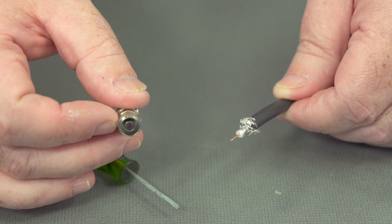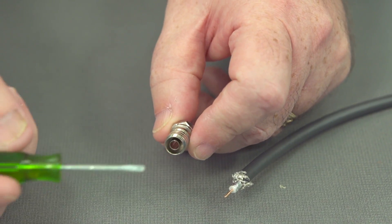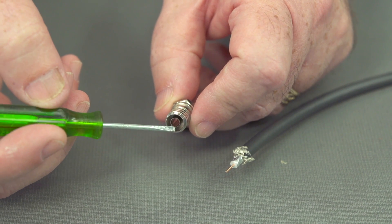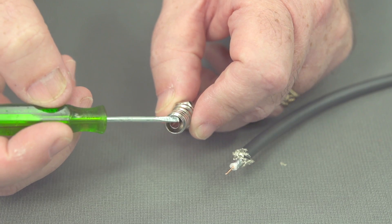You can see that there's a center hole in the middle, and this is where the center conductor and the dielectric will fit inside this middle hole. Then on the outside, this is where the braided shield will go.